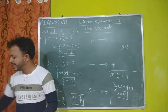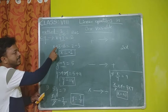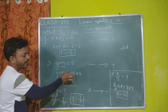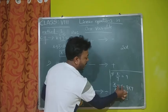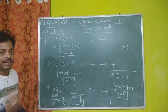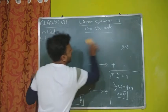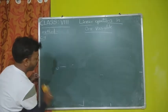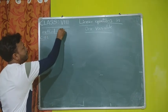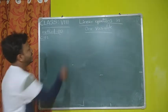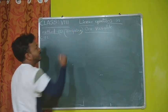Now we will move to the second method. This second method is also very, very simple. It has a particular name: the transposing method. The word itself says you have to transfer a term from one side to the other. In transposing, one side always has the variable and the other side always has the constant — that is common to both methods.